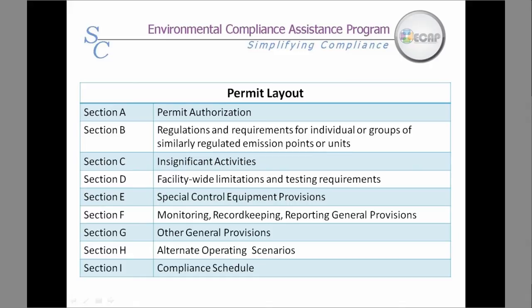Section G includes general provisions. Section H covers alternate operating scenarios. Section I will list a compliance schedule. Sections H and I may or may not exist on your permit.